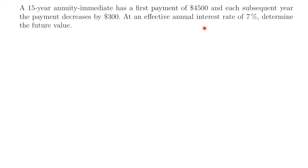Welcome back. Let's start with this example. We have a 15-year annuity immediate with a first payment of $4,500, and each subsequent year the payment decreases by $300. At an effective annual interest rate of 7%, determine the future value.